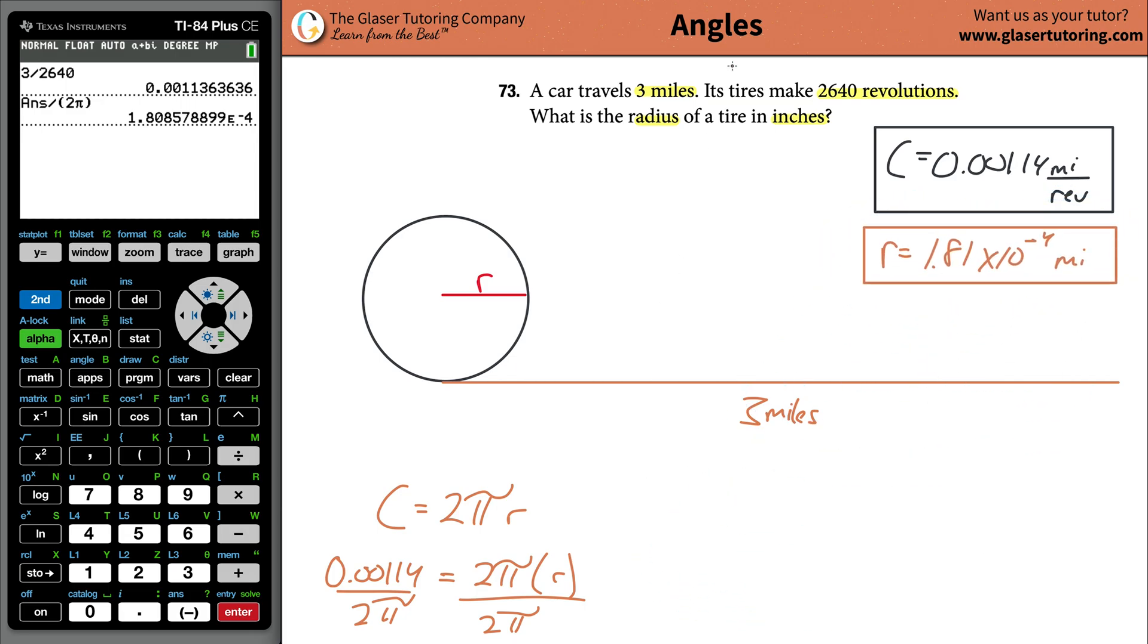That's the radius, but they didn't want it in miles. What did they want it in? They wanted it in inches. So now all you have to do is figure out how do we get from miles to inches. You need to know a conversion factor. There's going to be about 5,280 feet in one mile, and then you have to know how many inches are in a foot.